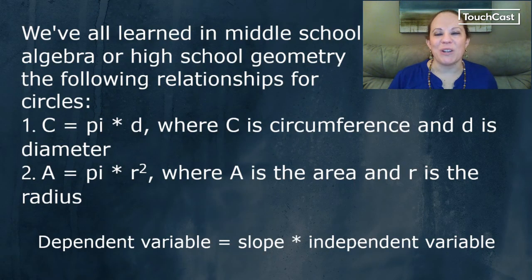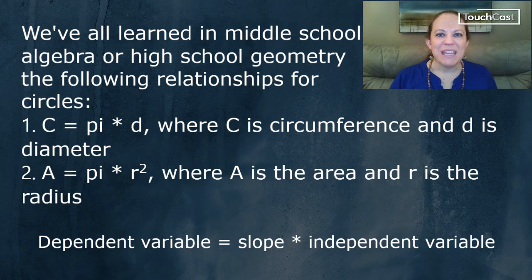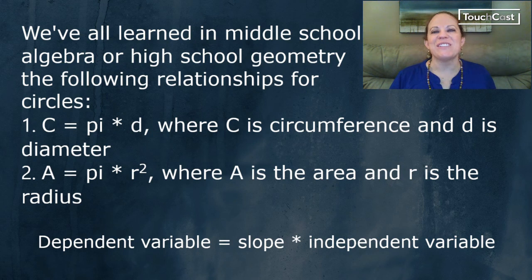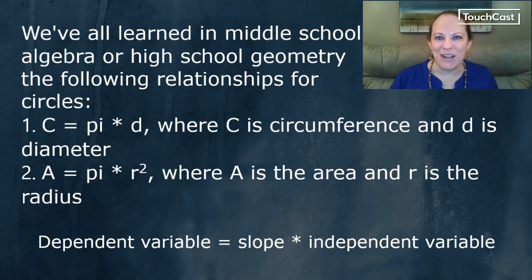At some point, we all learned, whether it was middle school algebra or high school geometry, the following relationships for circles: C = pi * d, or circumference equals pi times the diameter of the circle, and A = pi * r², where A is the area and r is the radius. Notice that both of these relationships look an awful lot like a dependent variable equals a slope multiplied by an independent variable with an intercept of zero.